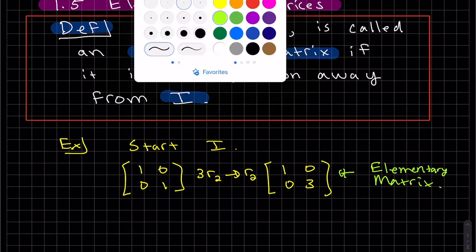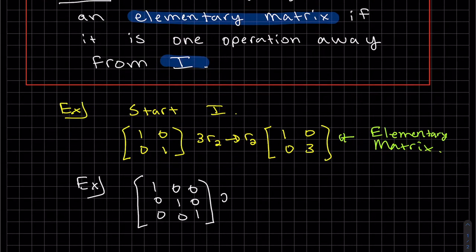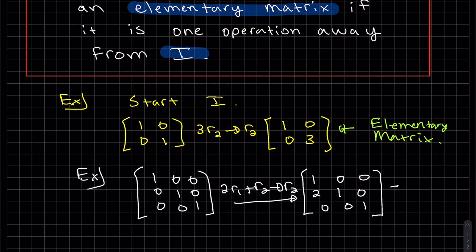Let's do another one. So we're just changing row two and we'll take two row one, add it to row two and that is another elementary matrix.